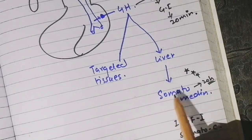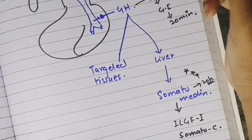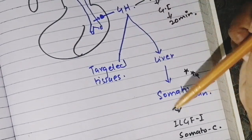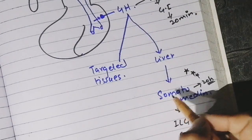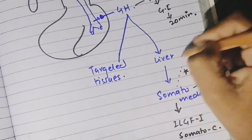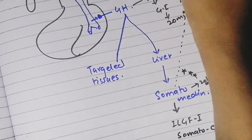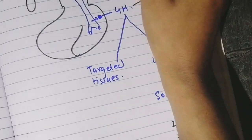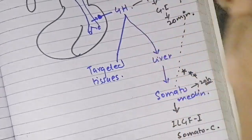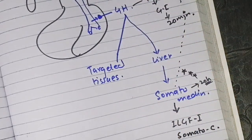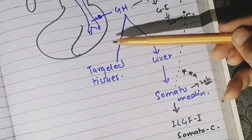The release of growth hormone from the hypothalamus is also controlled. The body senses the concentration of growth hormone, and if growth hormone is excessive — because excessive concentration of growth hormone is harmful for the body, as it can cause diabetes, ketosis, and fatty liver — somatomedins inhibit the growth hormone releasing factor. So somatomedins are very necessary for the normal functioning of growth hormone.